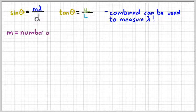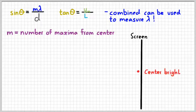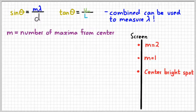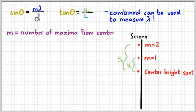What does the M represent? M is the number of maxima counting from the center. If M is 1, that's the first bright spot above the center bright spot. There's the center bright spot, then the first bright spot, then the second bright spot. Y subscript M is the distance to where M is the number of the maxima — so that distance would be Y1, that distance would be Y2. If we're talking about the first maxima, M in the equation equals 1. If talking about the second maxima, M equals 2. Just count how many maxima you are from the center.